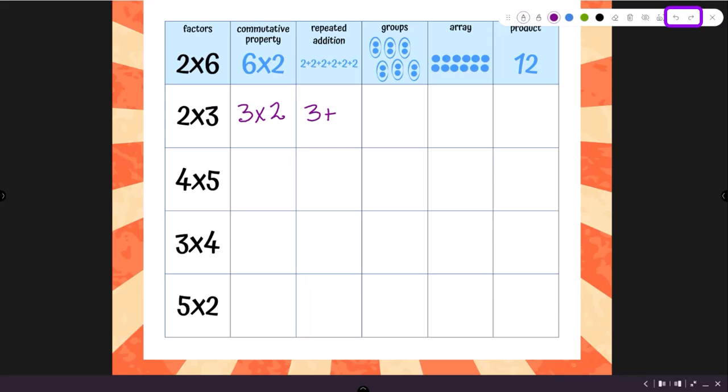Using the undo and redo buttons allows for quick corrections, and the eraser allows you to erase a small bit of annotations. Tapping the trash can will clear all existing annotations.